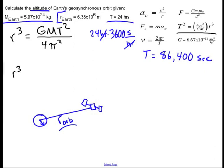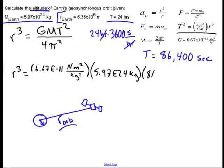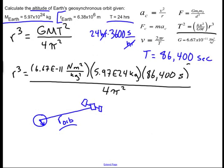So writing this out, I'm going to have r cubed is going to be equal to 6.67 e minus 11 newtons meters squared per kilogram squared. Now I will put in the mass of earth as 5.97 e24, that's kg, times 86,400 seconds. All of this is being divided by 4 pi squared. And I forgot my square up there on the period.